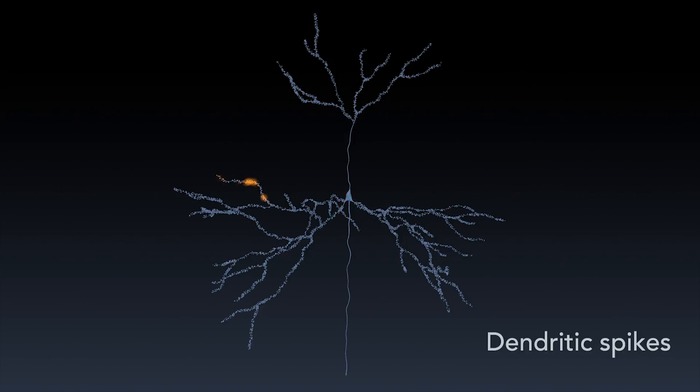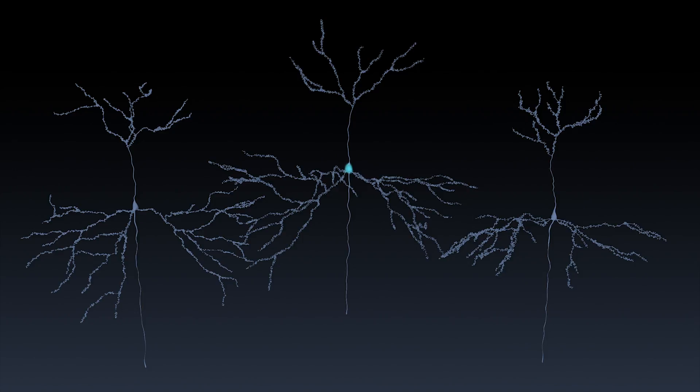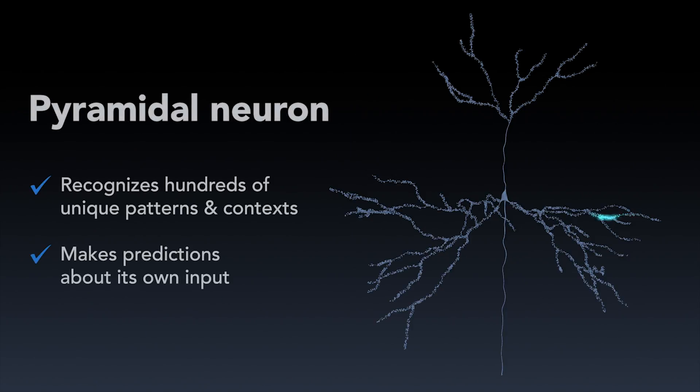Scientists have known this for many years but the purpose of dendritic spikes was not understood. We realized that dendritic spikes put the cell into a predictive state. A depolarized or predictive neuron will fire a little sooner than other neurons and will inhibit its neighbors from spiking. This is how the brain knows when its predictions are correct. One pyramidal neuron can recognize hundreds of unique patterns, hundreds of unique contexts in which it can predict its input.